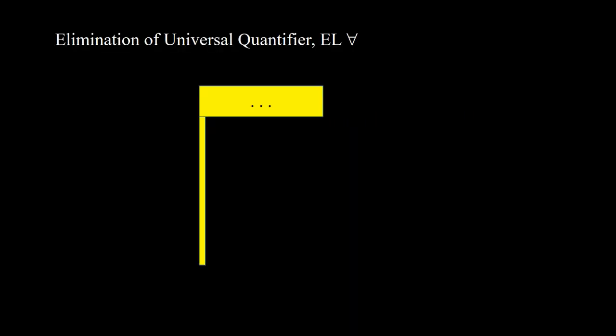Elimination of universal quantifier — we use this notation in reasoning. If we have under a rectangular or pointed flag ∀x ∈ S p(x), and we have y ∈ S, then we can conclude p(y). Note that we have variable x in the universal statement and variable y for the substitution — they can be different or can be the same.